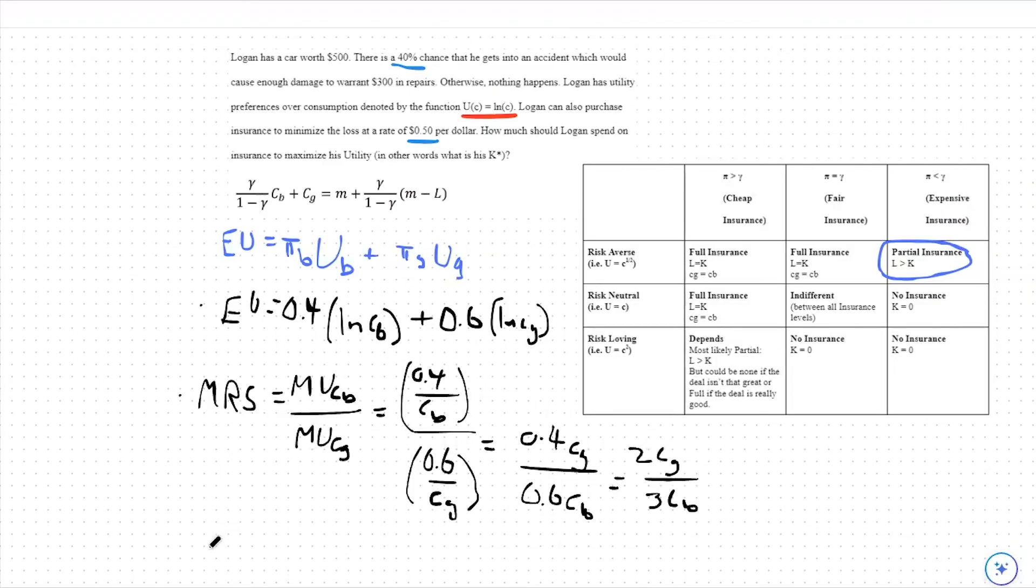Next, we're going to take a look at our budget constraint to find our price ratio. Our budget constraint is given to us in the question. This gamma is our premium per dollar of insurance. So our price ratio will be gamma over 1 minus gamma, the price of consumption in the bad state, plus just 1 as our price of consumption in the good state. We can think about both as composite goods, but one of which we need to factor in the amount of insurance that we have to pay.